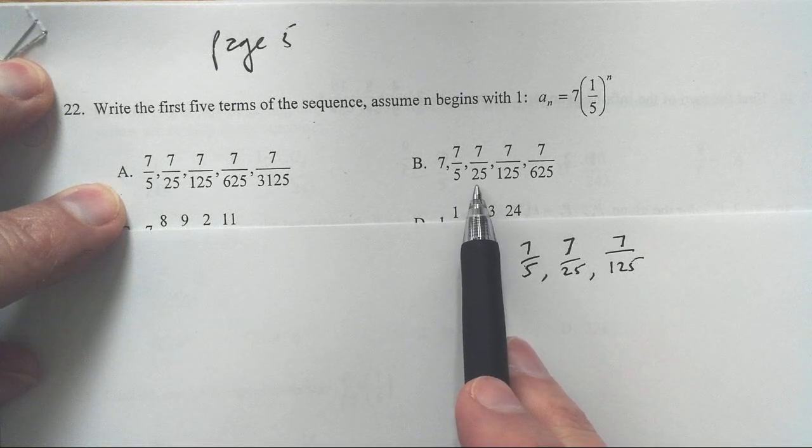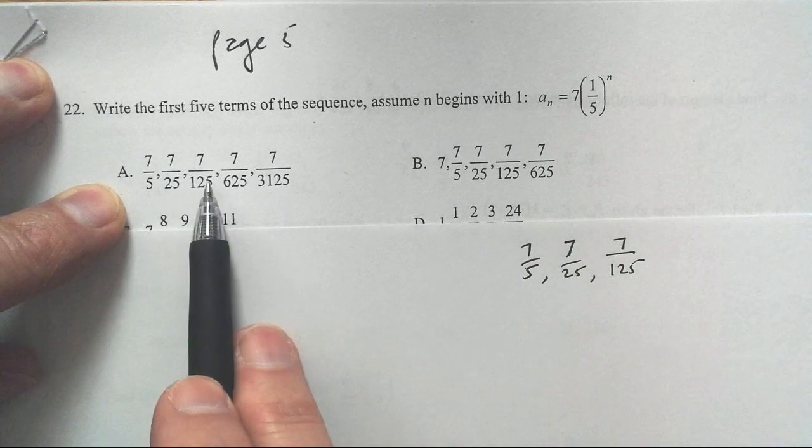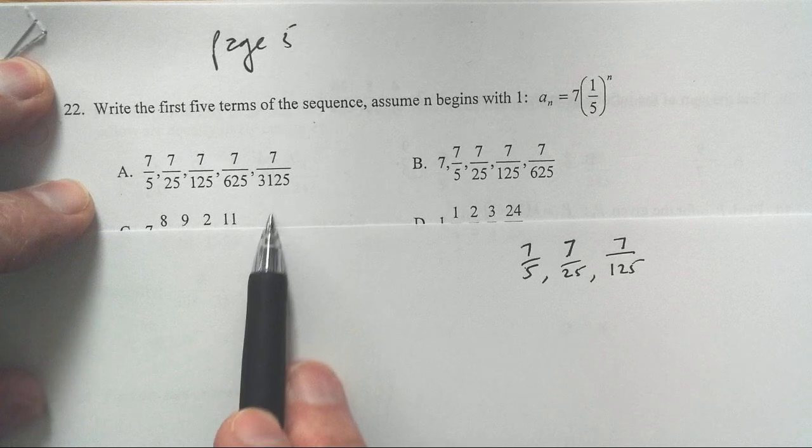And that is probably enough to get us in the ball game here. This has those values, but the first term is when n equals 1. So 7/5, 7/25, 7/125, times 1/5, times 1/5. I'm buying A.